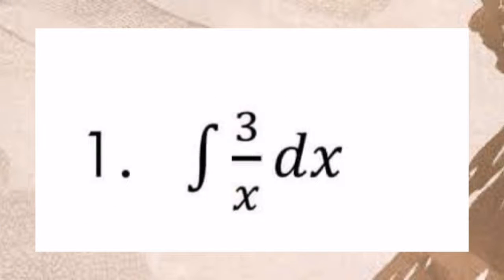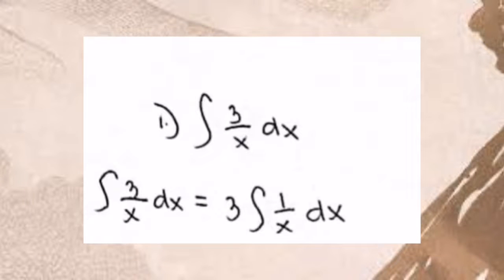Number 1 is the integral of 3 over x dx. We take out the constant 3 and place it in front, leaving 1 inside. It becomes 3 times the integral of 1 over x dx.